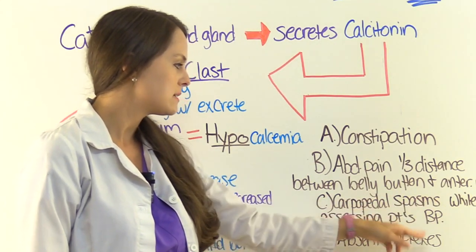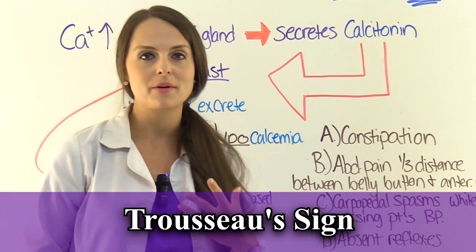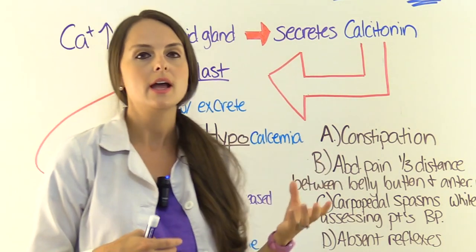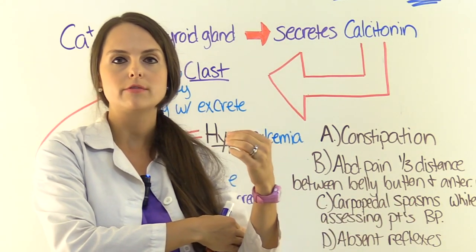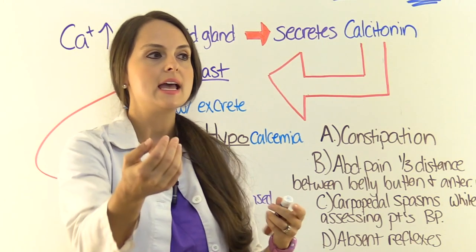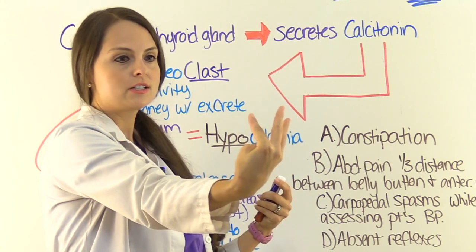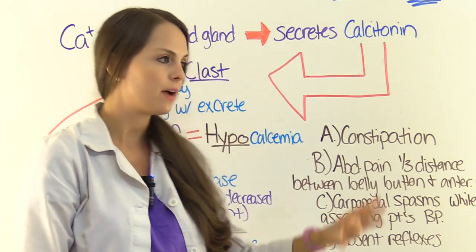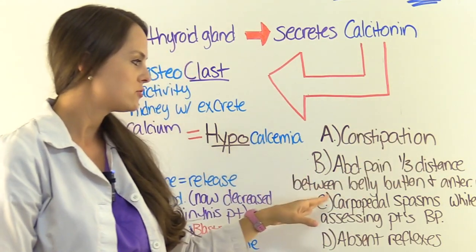Answer C — carpopedal spasms while assessing the patient's blood pressure. This is Trousseau's sign. When we discussed hypocalcemia, we talked about a positive Trousseau's sign: if you place a blood pressure cuff or tourniquet on the patient's upper arm and occlude blood flow through the brachial artery, if calcium levels are low enough, it will cause carpopedal spasms. Involuntarily, the wrist will flex, the thumb will abduct, and the fingers will extend. The patient may also complain of tingling and pain. If you start a patient on calcitonin, take their blood pressure, and you see that happening — that is a huge red flag. That is Trousseau's sign.